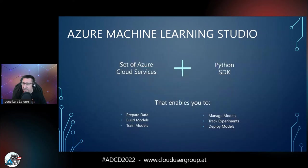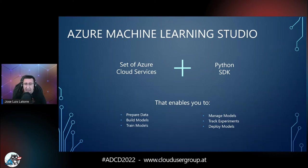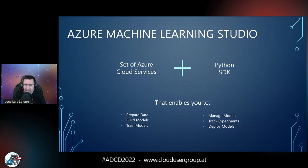The front-end is what we will usually work with. You go to ml.azure.com and you have a set of Azure cloud services, the Python SDK, and a very nice UI. That enables you to prepare data, build models, train models, manage models, and track experiments — in fact, we can track everything and deploy the models. One thing usually not mentioned is that Azure Machine Learning enables not just one person but an entire team to work together, including collaborative notebook annotation.